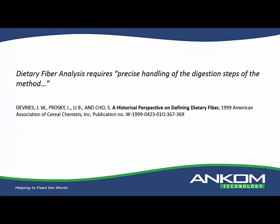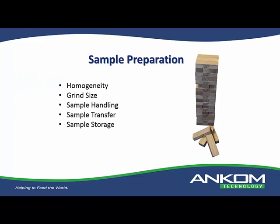The method itself — the two key developers state that the analysis requires precise handling of the digestion steps, so shortcuts or unvalidated modifications will impact results. Sample preparation may seem rudimentary, but it can have a significant effect. The homogeneity of the sample, the grind size — the method calls out a specific grind size — but often laboratories grind everything the same way or receive samples already ground without knowing if they meet method specifications. How samples are handled, the transfer from weigh boats to beakers, filtration, and sample storage all can impact results.